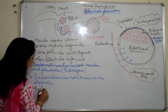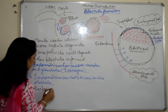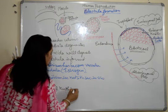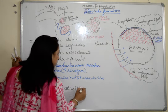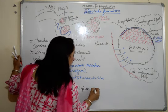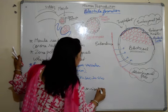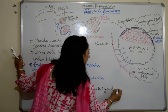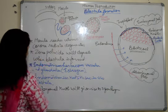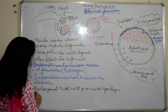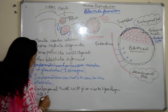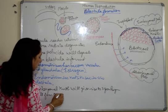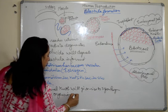What is the function of the embryonal knob? The embryonal knob will give rise to the three germ layers — ectoderm, mesoderm, and endoderm — and finally these layers will form the organs in the embryo.